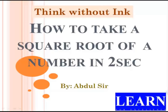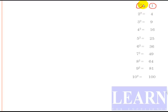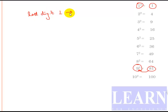Welcome back to Learn for Excellence. Before taking the square root of any number, first we need to know the last digits. If the last digit is 1, the number ends with 1, but the confusion is it can also end with 9 — so there are two possibilities. If the last digit of a square is 1, the last digit of the square root will be 1 or 9.